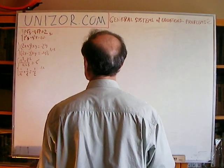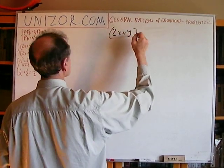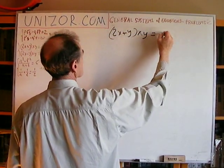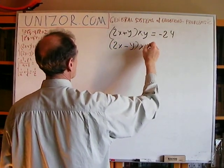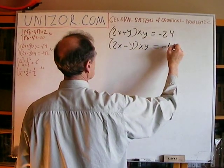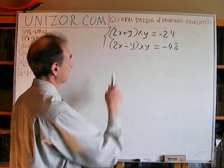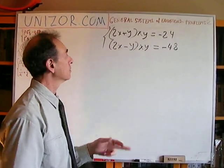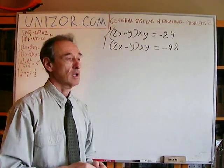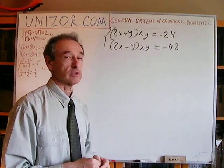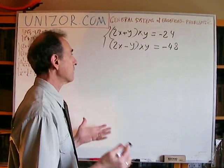Next problem. (2X plus Y) times XY equals minus 24; (2X minus Y) times XY equals minus 48. We have a multivariate polynomial of the third degree — the first factor is degree one and XY is degree two, so together it's degree three. Not typical; you can't really use standard formulas, so you have to think about what to do.